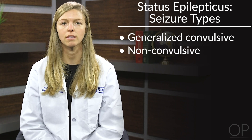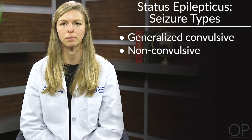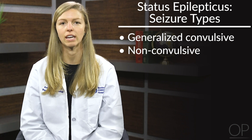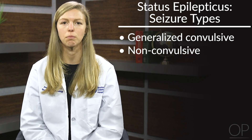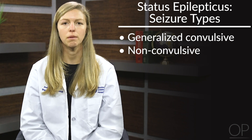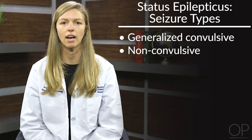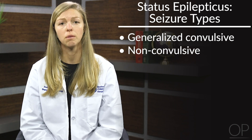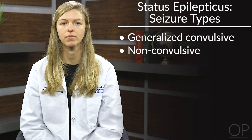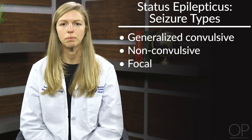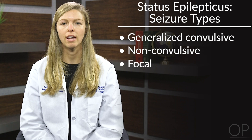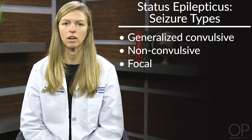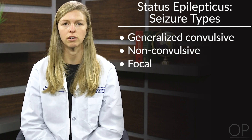Nonconvulsive status epilepticus is another type that can be hard to identify clinically. This occurs when seizures are ongoing in a comatose patient without obvious clinical changes like motor movements. Sometimes there are subtle signs such as eye blinking and face twitching, but most of the time there are no overt signs. Focal status epilepticus, where only one part of the body is affected, should be treated at 5 minutes if there is impaired consciousness, or at 10 minutes if consciousness is preserved.